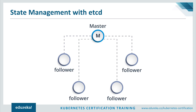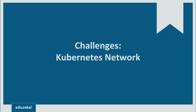Now that you know about Kubernetes architecture, let's look at the network setup challenges you may face. You must assign a unique ID to each pod, and containers in a pod should be able to communicate with each other. You should also make sure that pods can communicate with other pods in the same cluster, and that the application deployed inside a pod is accessible from the external world. These are the core networking challenges to address.